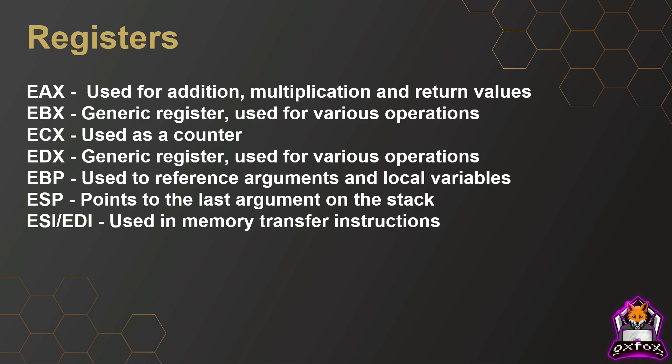We also have the registers. These are used by a program to store data which can then easily be referenced for later use. EAX is used for addition and multiplication, and is often used to store the value returned from a function. EBX is a generic register used for various operations. ECX is used as a counter, so you'll often see this when malware is initiating a loop and counting through it. EDX is another generic register. EBP is used to reference arguments and local variables on the stack, and ESP points to the last argument on the stack.